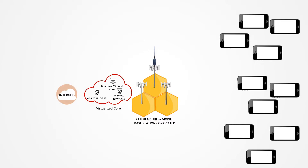The setup includes a co-located cellular UHF and mobile base station. A virtualized core connects the base station to the internet. The virtualized core has a broadcast offload core, a wireless network core, and an analytics engine.